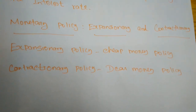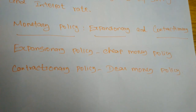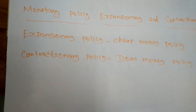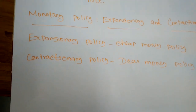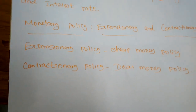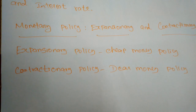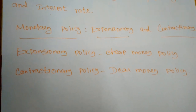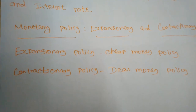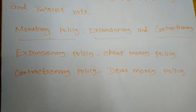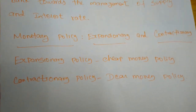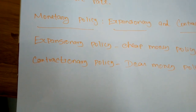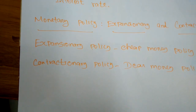In monetary policy, we must know about two concepts: the expansionary and the contractionary. The expansionary monetary policy is also called the cheap money policy. It is when a monetary authority uses its tools to stimulate the economy. An expansionary policy maintains short-term interest rates at a lower than usual rate, or increases the total supply of money in the economy.